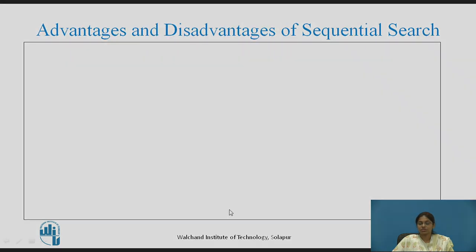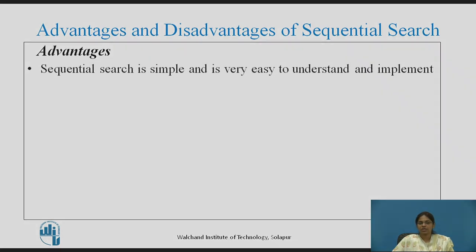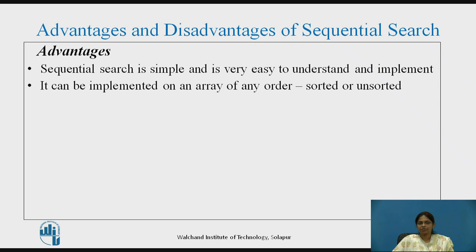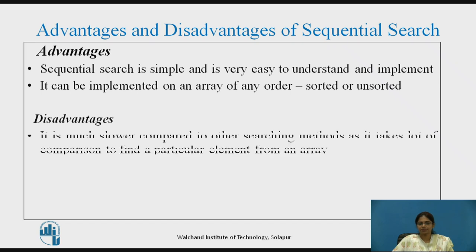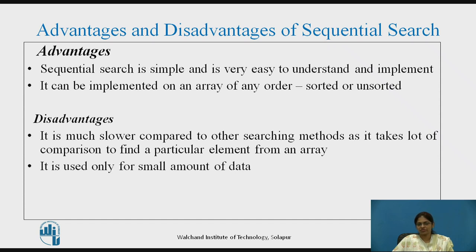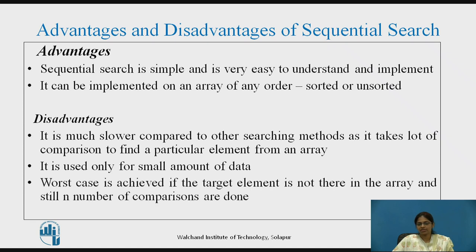Advantages: Sequential search is simple and very easy to understand and implement. It can be implemented on an array of any order, whether sorted or unsorted. Disadvantages: It is much slower compared to other searching methods as it takes many comparisons to find a particular element. It is used only for small amounts of data. In the worst case, if the target element is not in the array, n comparisons are still performed.